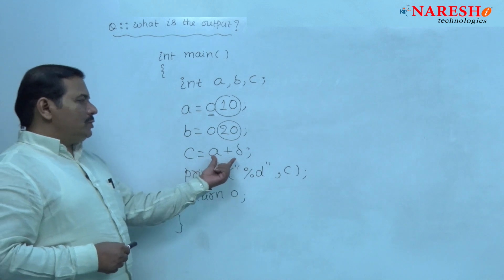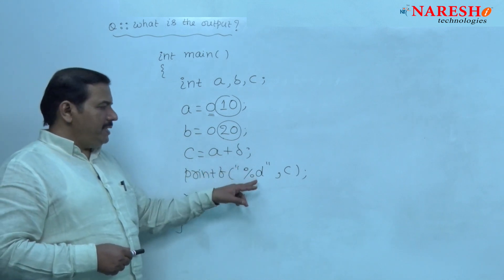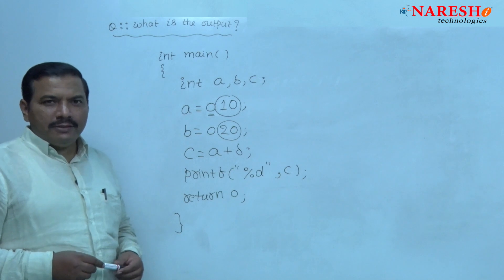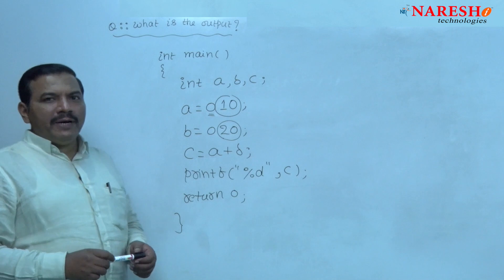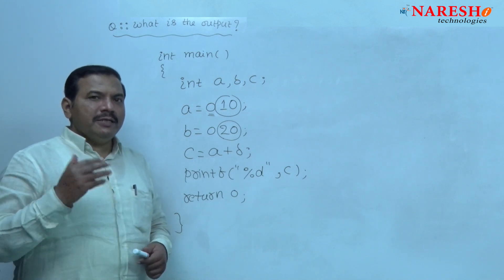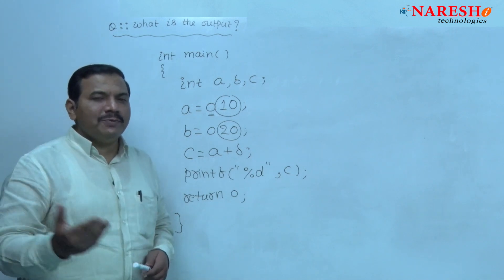Adding those two octal integer constants and printing the result in a decimal format. Percent d is a format specifier. The result prints as a decimal integer.